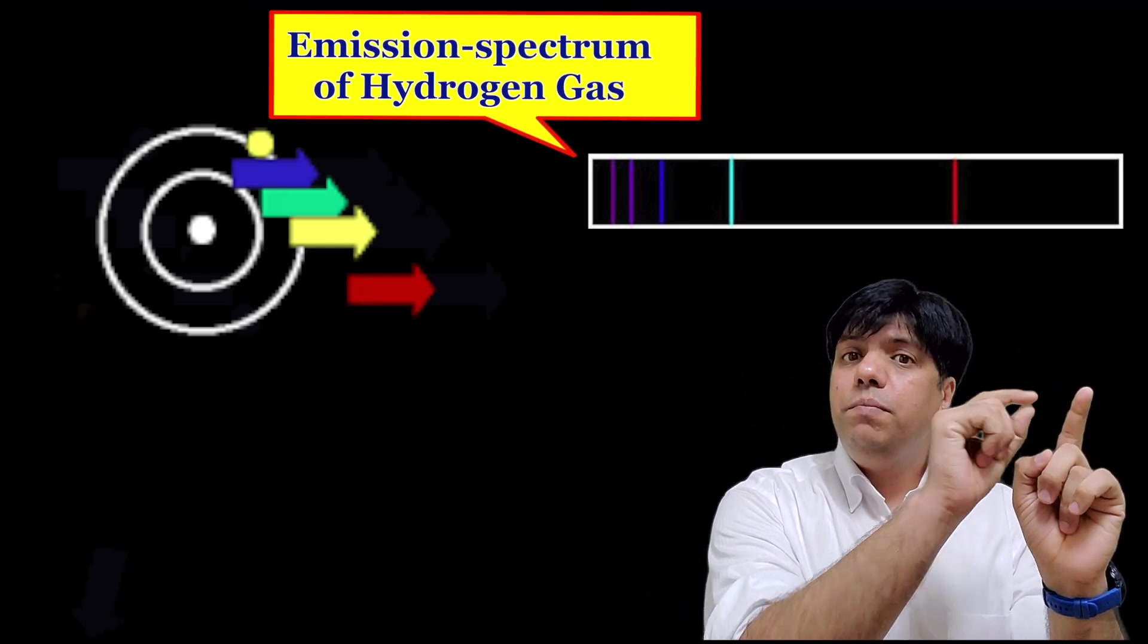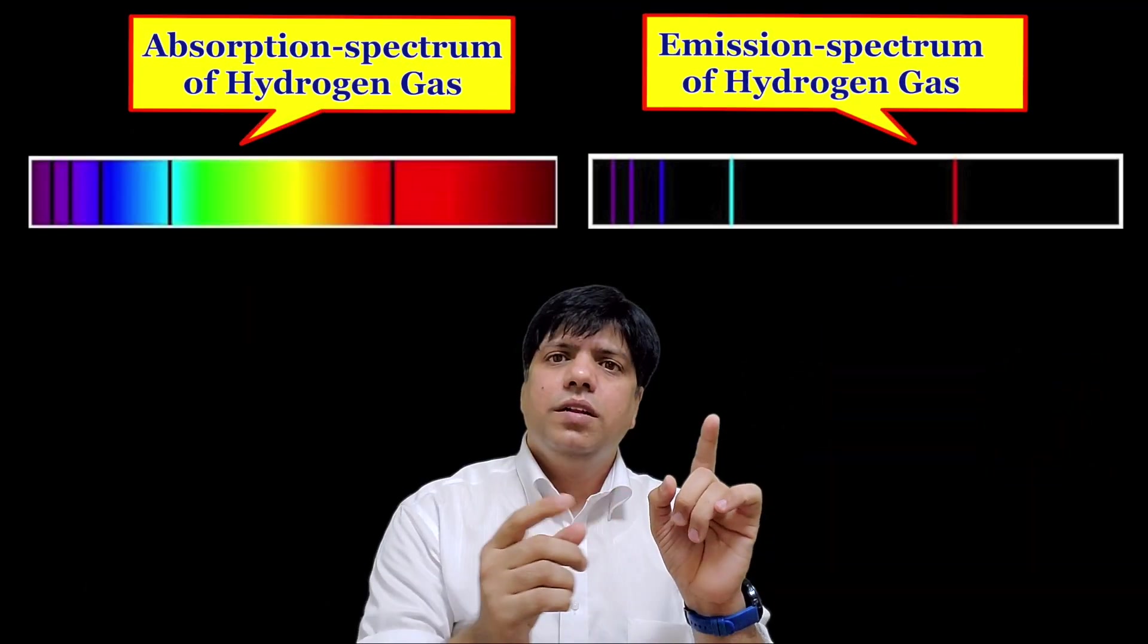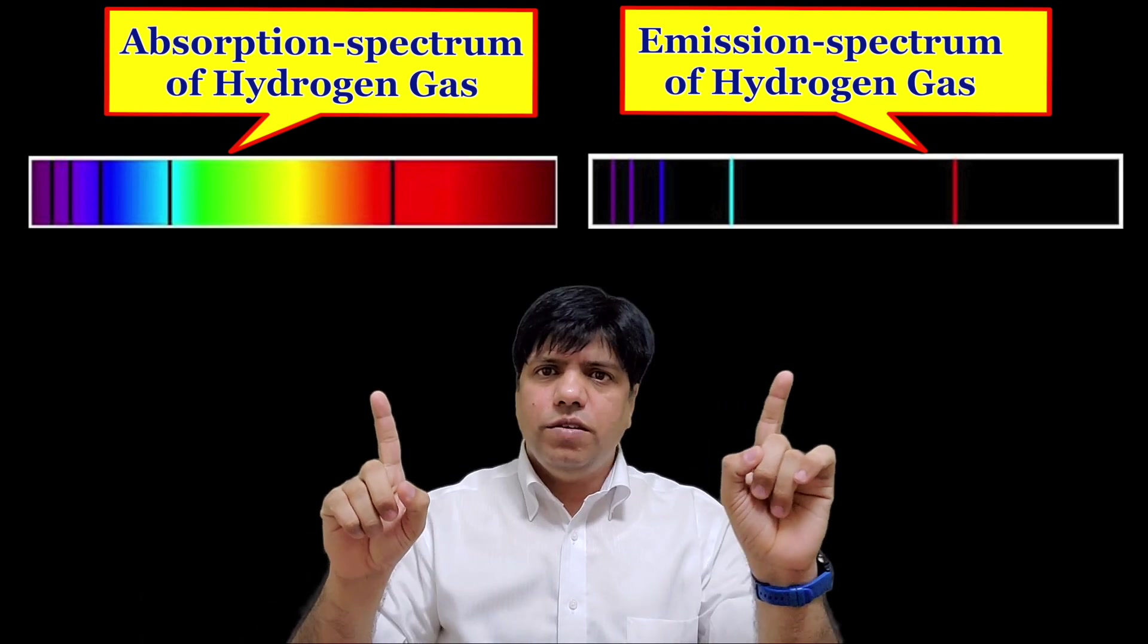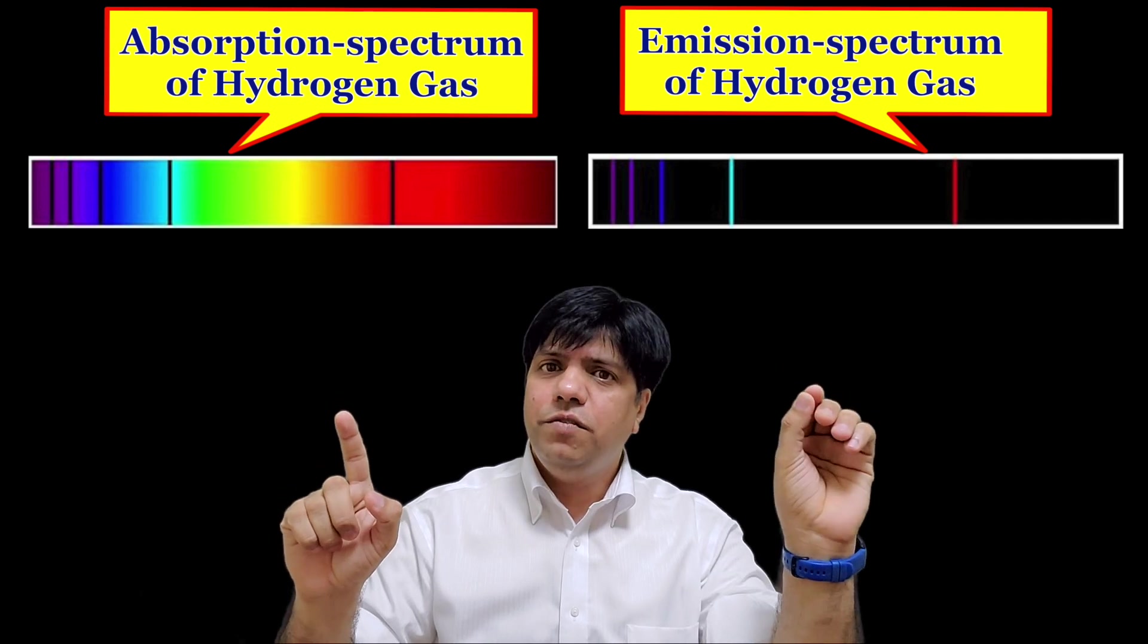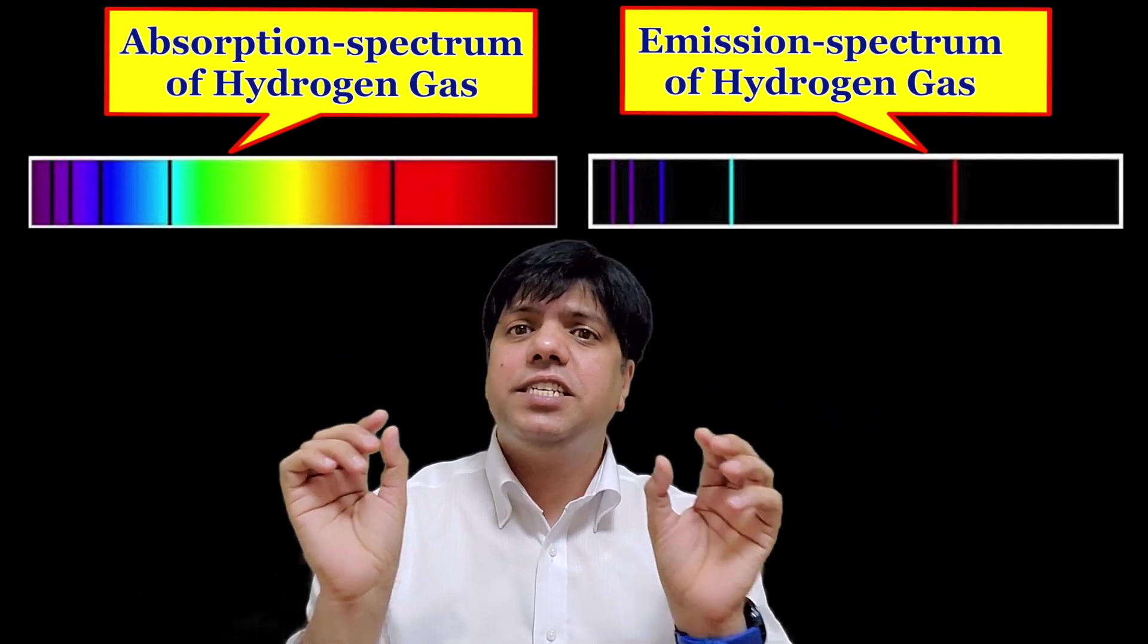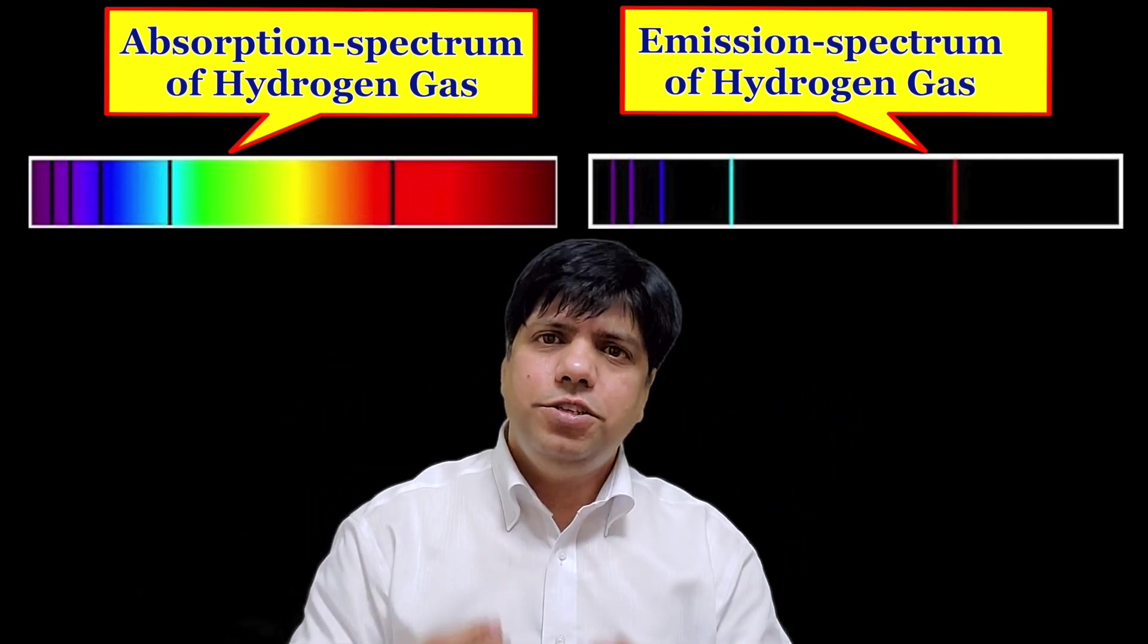And then what you get is this, we call this emission spectrum. The light was emitted out of the atom. Now if you look carefully, this and this, so this looks like the negative of this photograph.